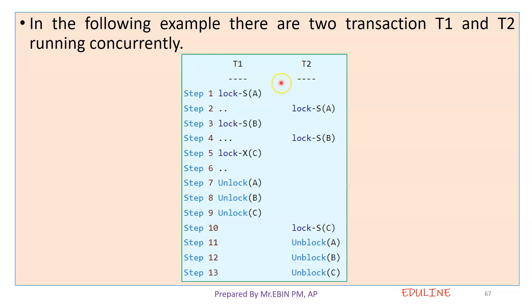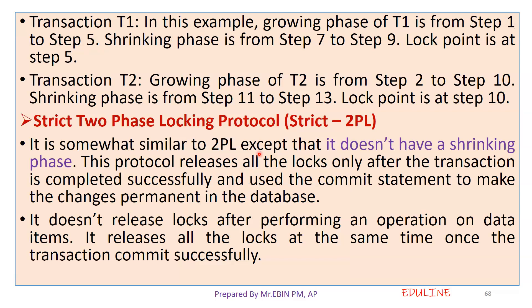Now, for this transaction, we have locking and unlocking — this is the growing phase and the shrinking phase. This is an example of the working phases. We are using this locking protocol — this is the two-phase locking protocol.